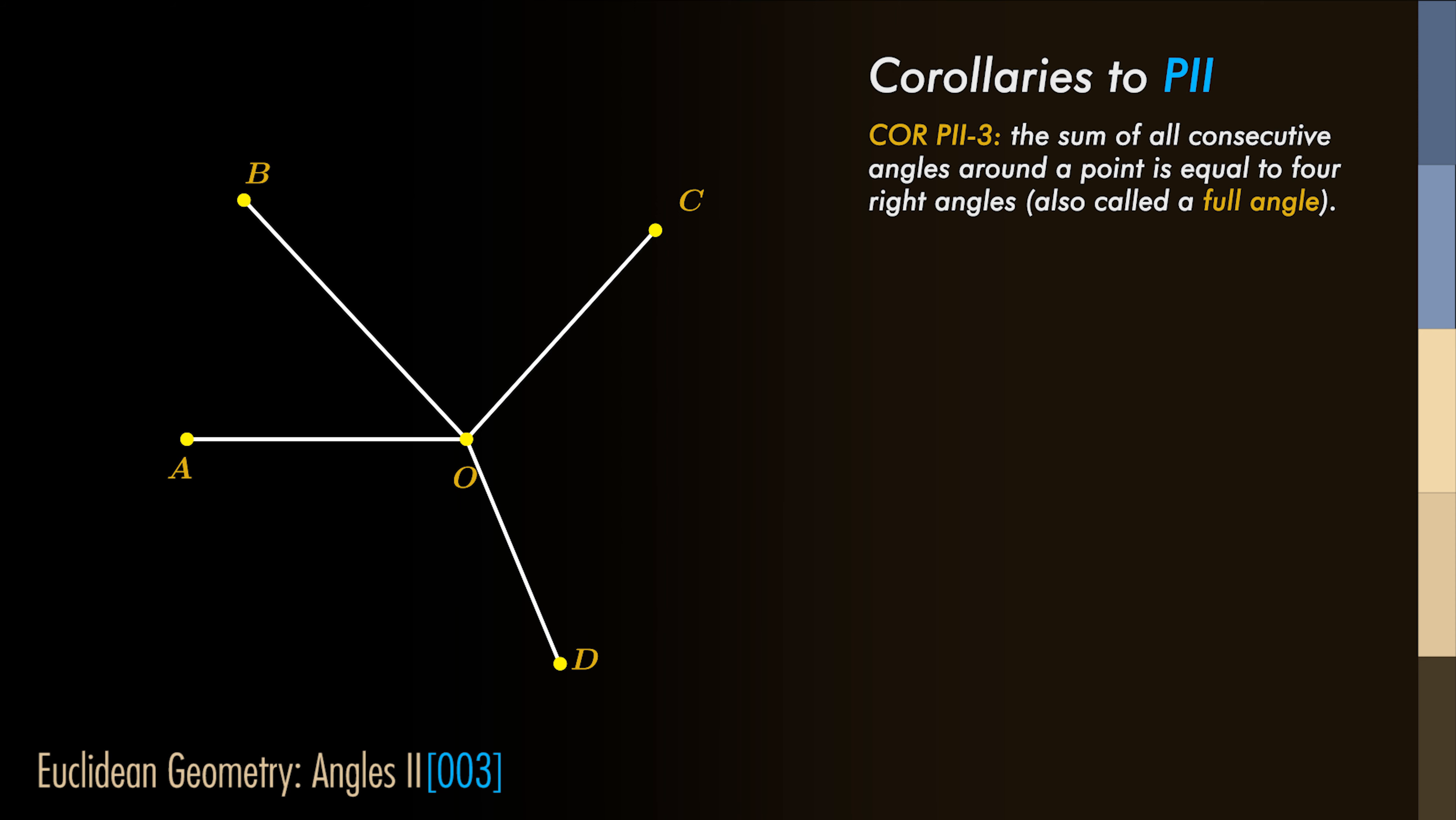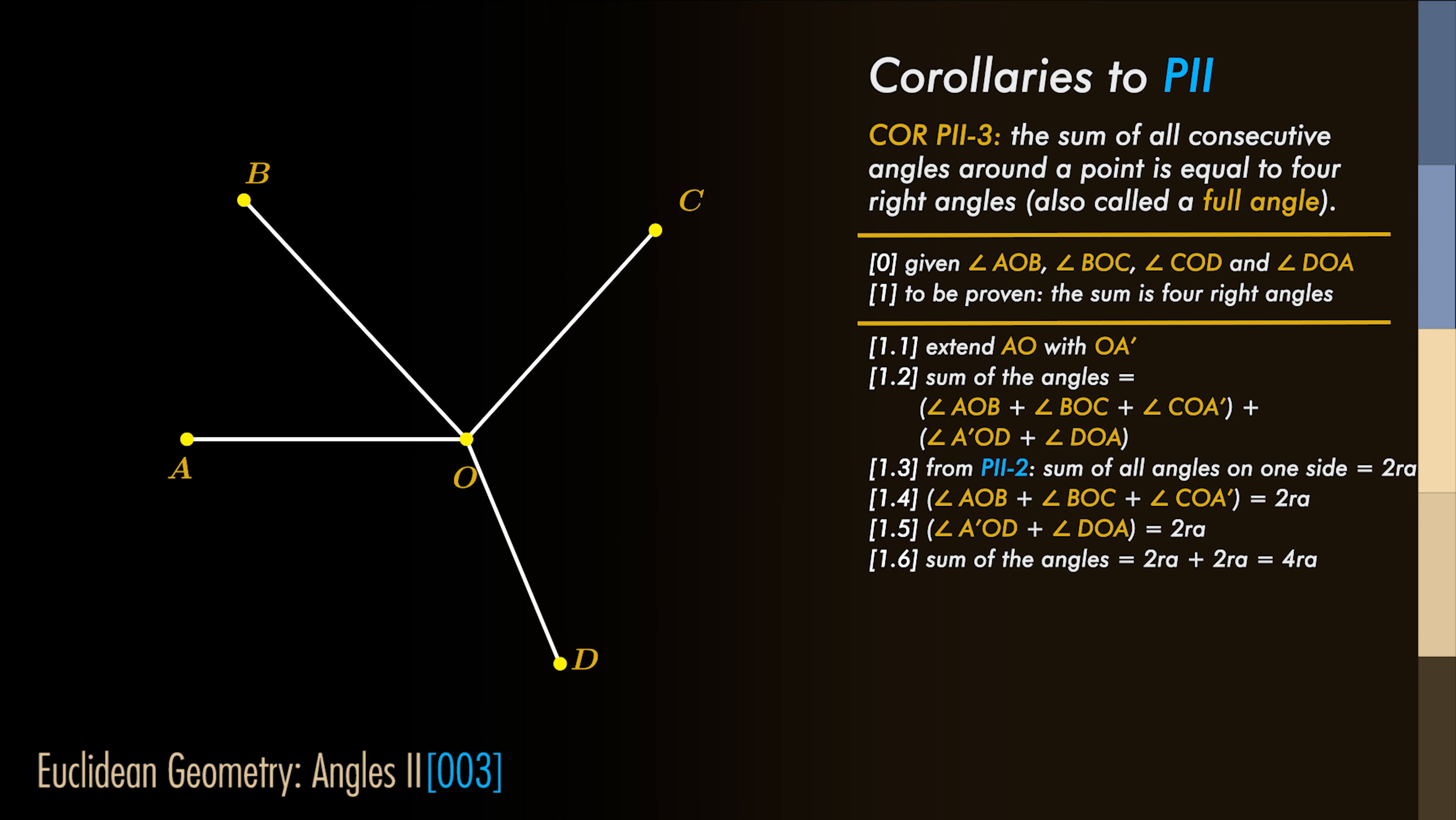Let's show this on an example. We start with angles AOB, BOC, COD and DOA. We need to prove that their sum is four right angles.